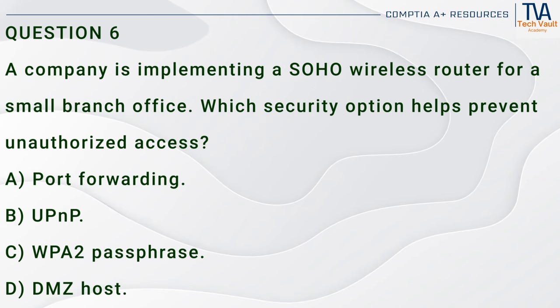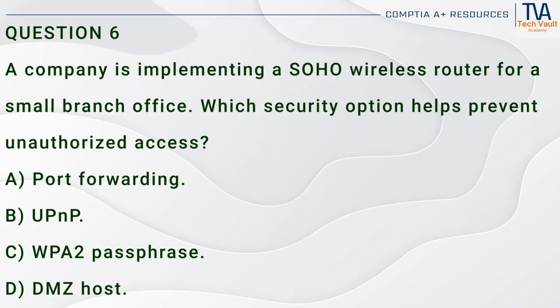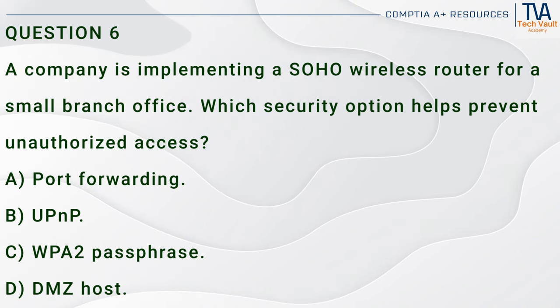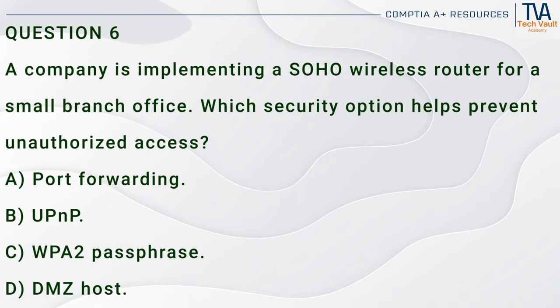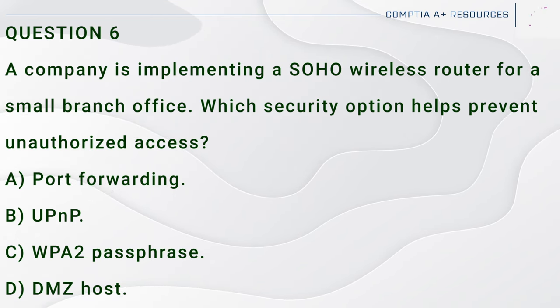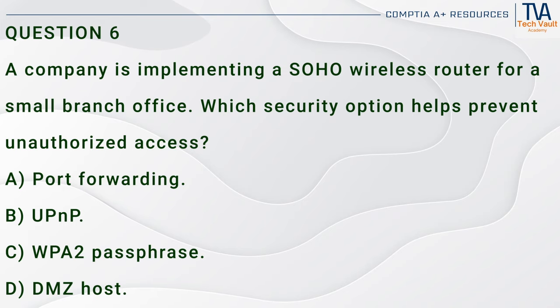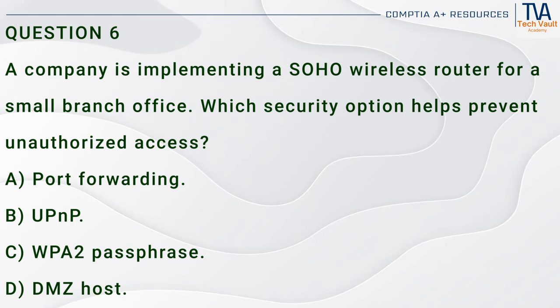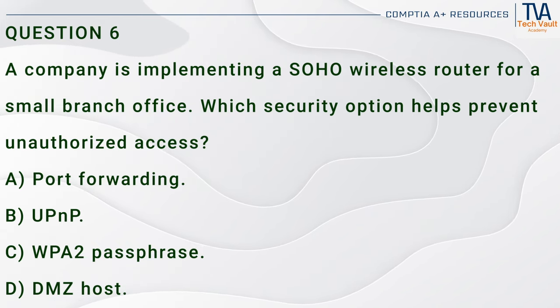Question 6. A company is implementing a SOHO wireless router for a small branch office. Which security option helps prevent unauthorized access? A. Port forwarding. B. UPnP. C. WPA2 passphrase. D. DMZ host.